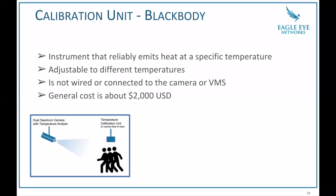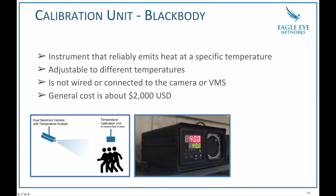Here's what the black body looks like. You have the camera in this case on the left, with the black body hung above the people — similar to how we hung it above the door in our lobby. You can see in this image that the green shows what we have the temperature set to — in this case, 40 degrees Celsius — and the red shows what it's actually emitting. When you first plug it in it starts at room temperature, then warms up to 40 degrees Celsius, and throughout the day you'll see it fluctuate slightly — 40.1, or down to 39.8.